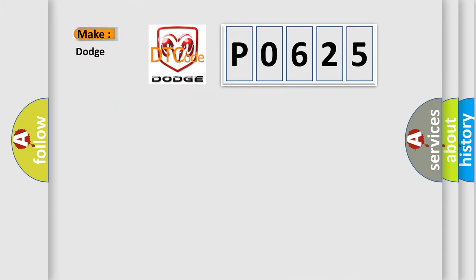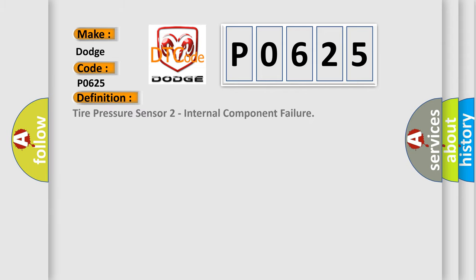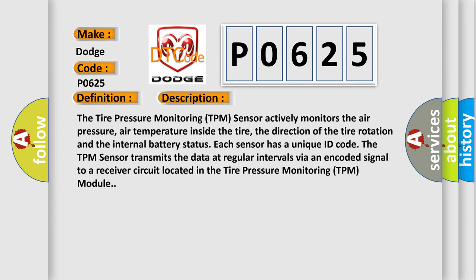So, what does the diagnostic trouble code P0625 interpret specifically for Dodge car manufacturers? The basic definition is: Tire Pressure Sensor 2 Internal Component Failure. The Tire Pressure Monitoring (TPM) sensor actively monitors the air pressure, air temperature inside the tire, the direction of tire rotation, and the internal battery status. Each sensor has a unique ID code. The TPM sensor transmits data at regular intervals via an encoded signal to a receiver circuit located in the tire pressure monitoring (TPM) module. This diagnostic error occurs most often in these cases.